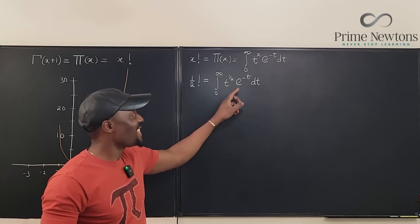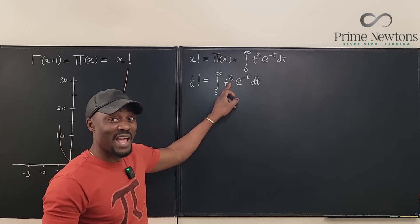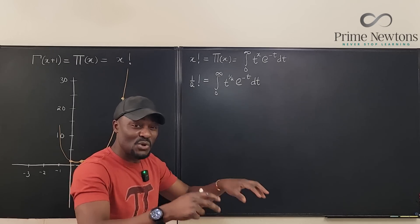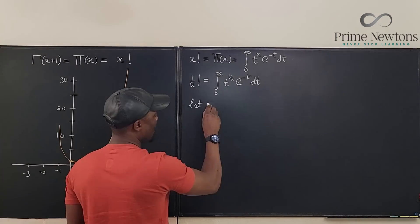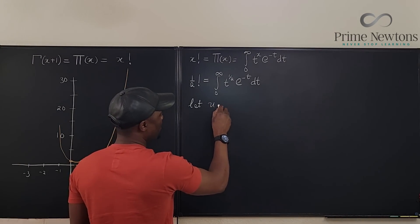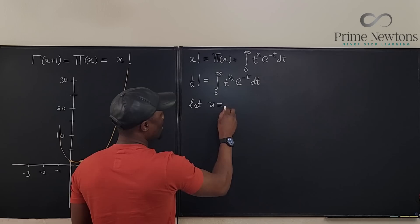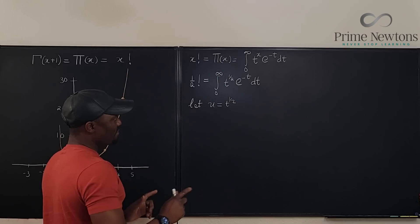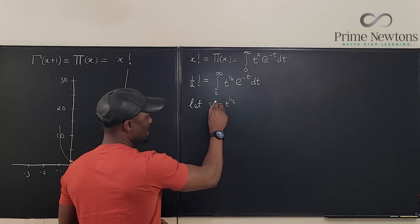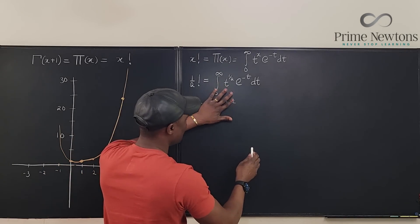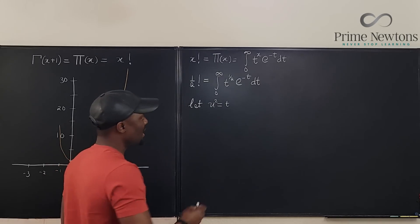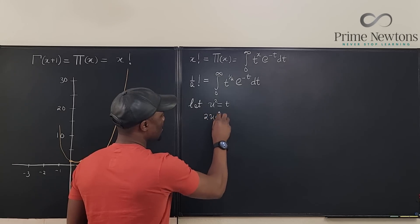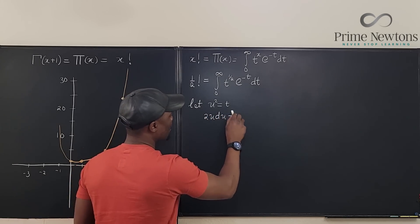To make things easier, I want to get rid of that t to the one-half, because it would keep showing up under integration and never go away. So let u equal t to the one-half, which means u squared equals t. Then differentiating, two u du equals dt.